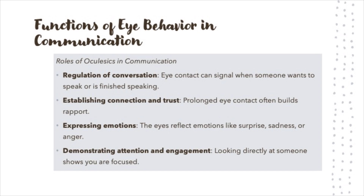Emotions are another area where oculasics is particularly important. You can tell a lot about someone's emotional state just by looking at their eyes. For example, wide eyes can signal surprise or fear, while narrow eyes might indicate suspicion or anger. Similarly, attention and engagement are often communicated through steady eye contact, while a lack of eye contact can suggest disinterest or discomfort.